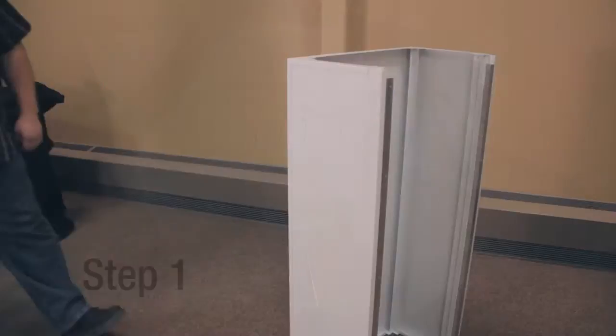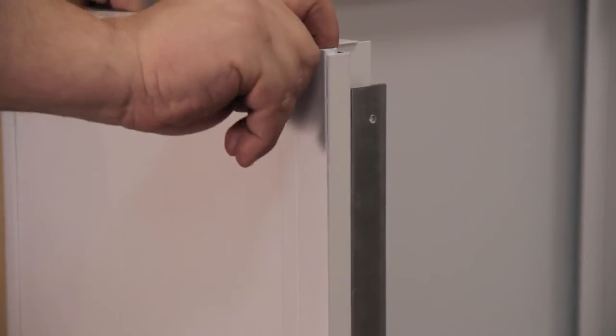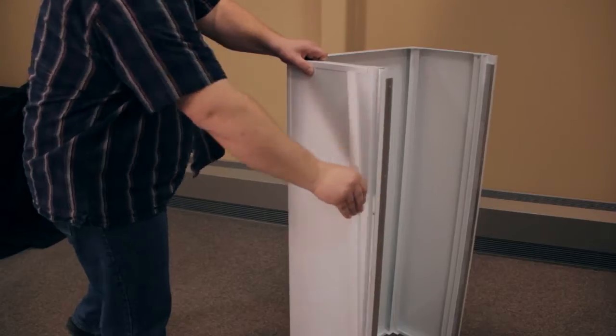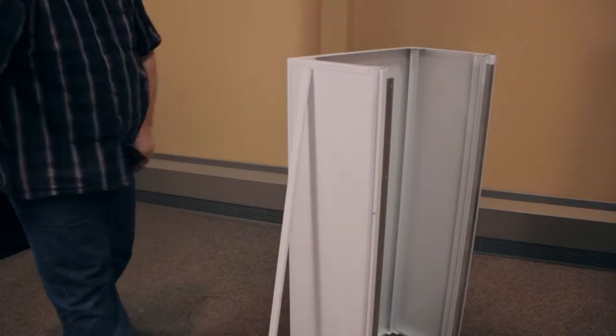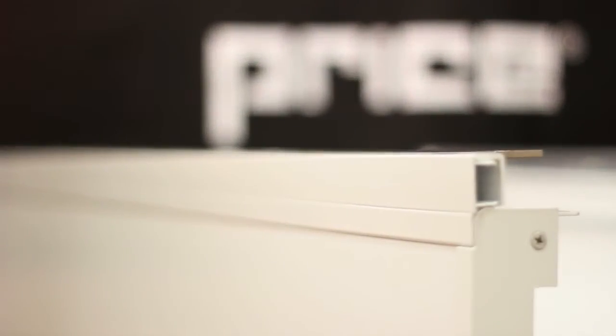Step 1. Remove trim cover by placing your finger in the opening and pulling slowly to prevent bending the trim piece. Keep this close by for use in the final step of installation.